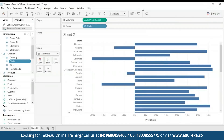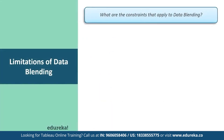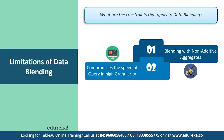Let me go back to my presentation. Now let's look at the limitations of data blending. First, blending with non-additive aggregates: there are some blending limitations around non-additive aggregates such as COUNT DISTINCT, median, and raw SQL aggregate. When you blend on a field with a high level of granularity — for example, date instead of year — queries can be slowed down, so the speed of the query gets compromised.